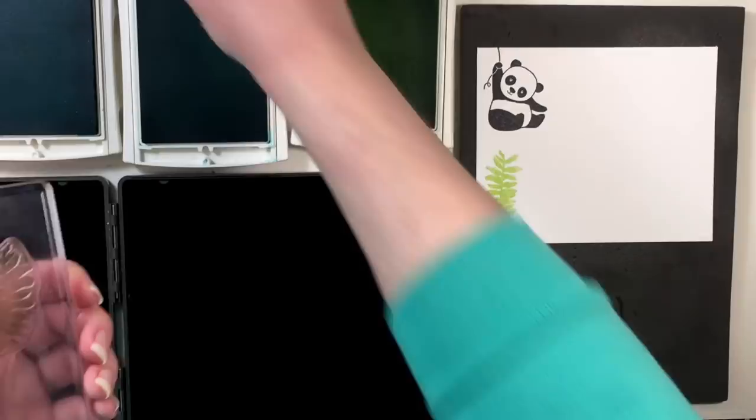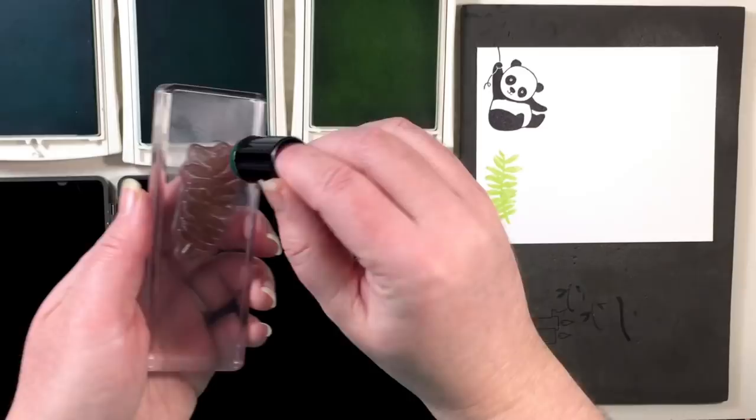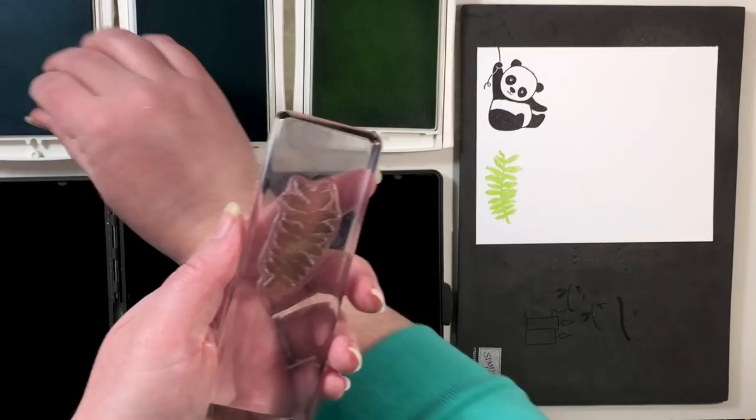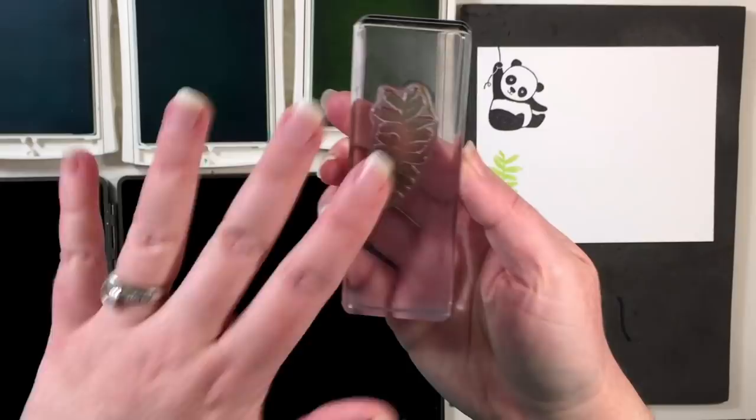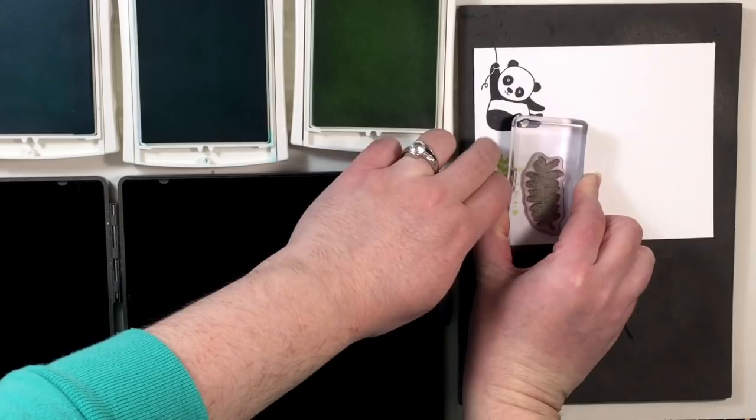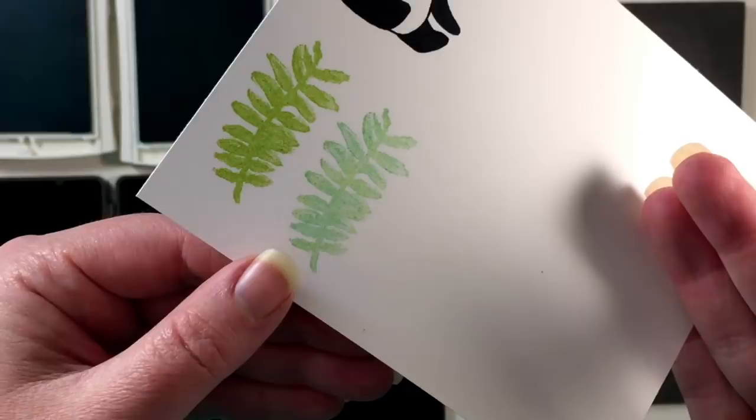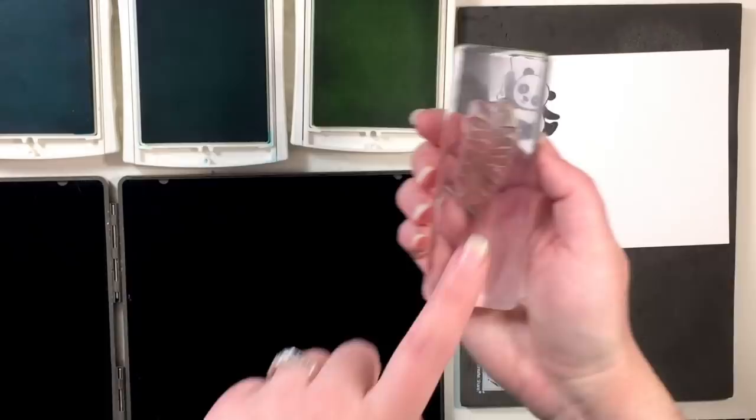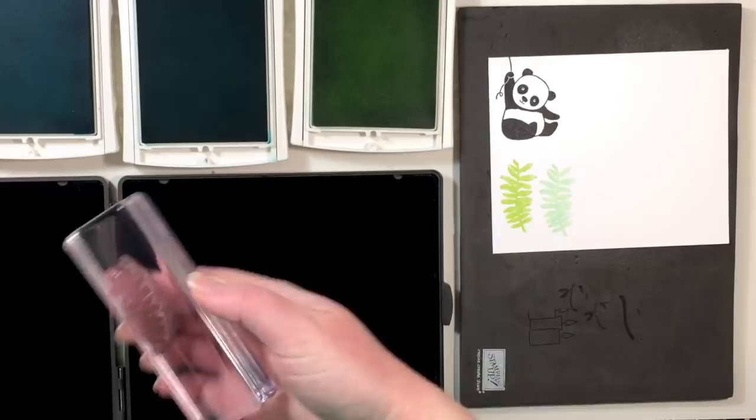And now before I clean it or re-ink it or anything, I'm going to take one of the sponge daubers for the other colors and I'm just going to add a little bit of color from the other inks to that stamp. And then before I stamp it down, I'm going to give it a huff to re-moisten that ink and then get it on the paper. So now I'm going to clean this off on my Stampin' Scrub and then I'm going to move on to my next ink color.